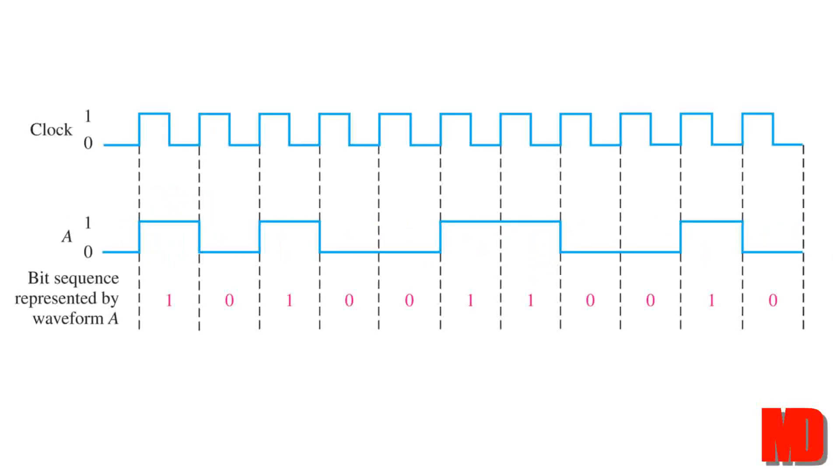Here we have a simple timing diagram. The clock determines when the pulse train representing our digital information is read. In the first bit time, the pulse train is high, resulting in a digital one.